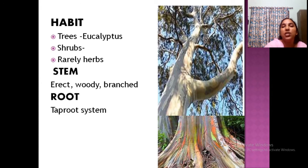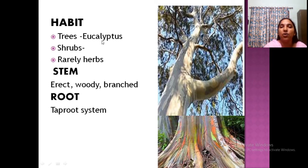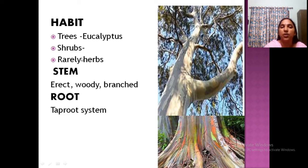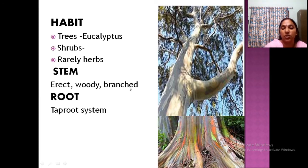You can see the picture of eucalyptus here. The bark is soft and falls off every year. Trees like eucalyptus are found in this family; some may be shrubs, and some are rarely herbs. Shrubs are most commonly observed. The stem is usually erect, woody, and branched, and a taproot system is present.